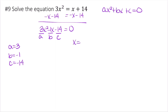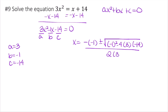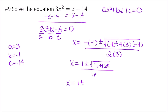Plugging into the quadratic formula: x equals negative negative 1 plus or minus the square root of negative 1 squared minus 4 times 3 times negative 14, all divided by 2 times 3. That simplifies to 1 plus or minus the square root of 1 plus 168, which is the square root of 169, all over 6. So x equals 1 plus or minus 13 over 6.